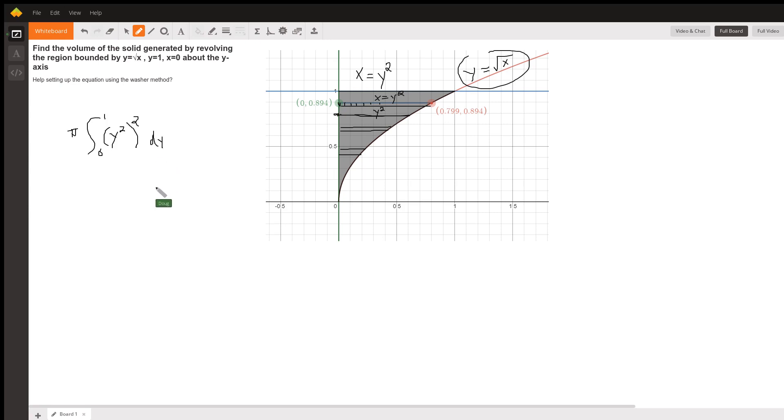So, there's your definite integral, which you can write as pi times the definite integral from 0 to 1 of y to the 4th dy.